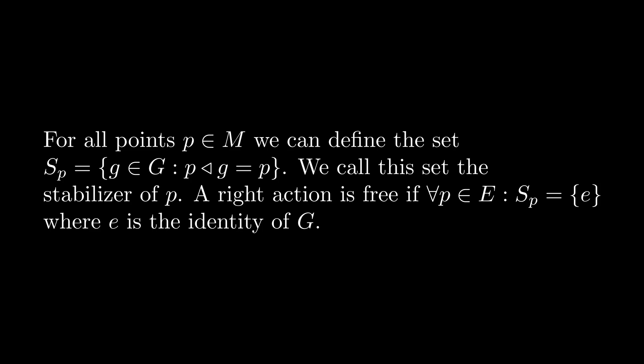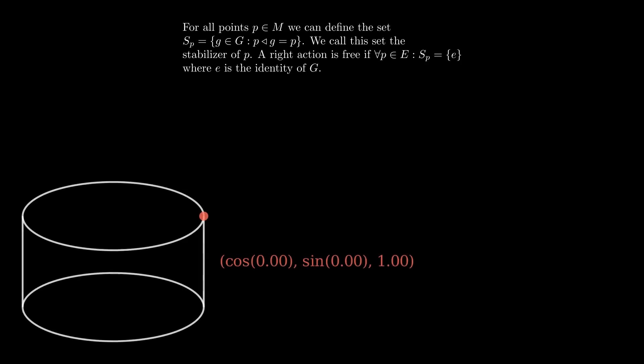Let us look at the cylinder example. We start with a point up here, then we do the following right action. The point moves down. Therefore, minus one does not belong to the stabilizer. Now let's move back to our starting point and do a right action with another number. The point still moves. Meaning minus 0.5 is not part of the stabilizer.